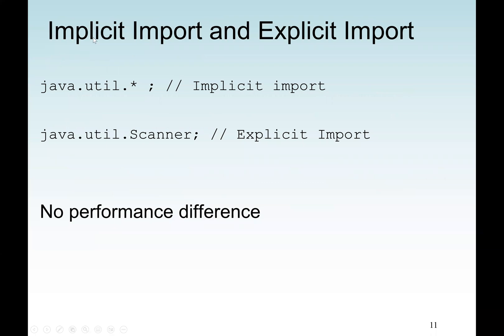We should also know the difference between implicit and explicit import. When we write import java.util.*, the asterisk means we are importing everything in the utility package — this is called implicit import. Or we can do explicit import, importing one class at a time: import java.util.Scanner means we are importing only the Scanner class from the utility package. There is no performance difference between the two. However, if you are using more than one class from the utility package, it's convenient to import everything instead of importing them individually. That concludes these lectures — thank you for your time, see you in the next lecture.